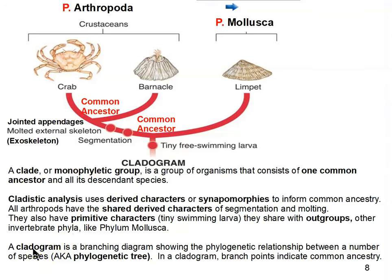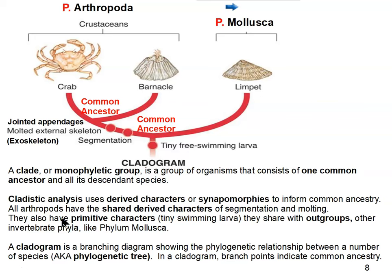How many clades are actually shown on this cladogram or phylogenetic tree? A clade has to be a monophyletic group, so Arthropoda is a monophyletic group — there's a common ancestor of all arthropods. You can also consider every branch on a phylogenetic tree to be a clade. So the crabs represent a clade, the barnacles represent a clade, the limpet represents a clade, along with other species closely related to limpets. Pause the video and think about how many clades there are and identify what they are.